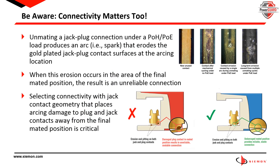Some of the implications of remote powering currents used in PoE applications include the fact that contact arcing can occur when unmating a connection with PoE being delivered, referred to as unmating under load. The arcing can cause erosion of the contacts as shown in this image of contact erosion over time. When the erosion occurs in the area of the final mated position on the jack or plug contacts, it can adversely affect connecting hardware reliability. Thankfully, this is not an issue with our crown jack contact geometry features on our Siemens MAX, ZMAX, and Terra jacks.